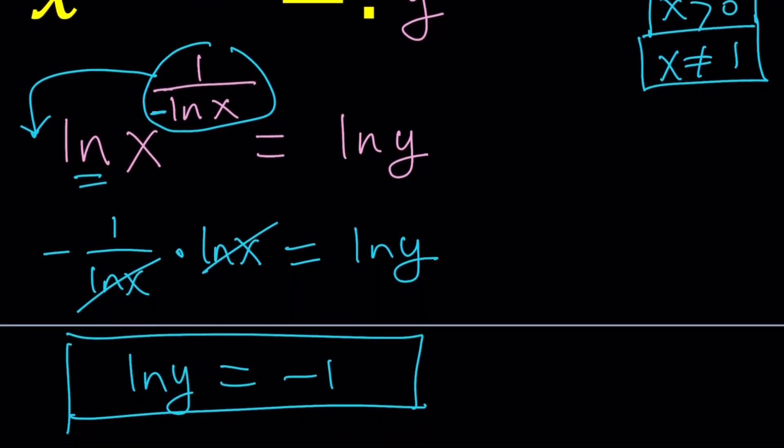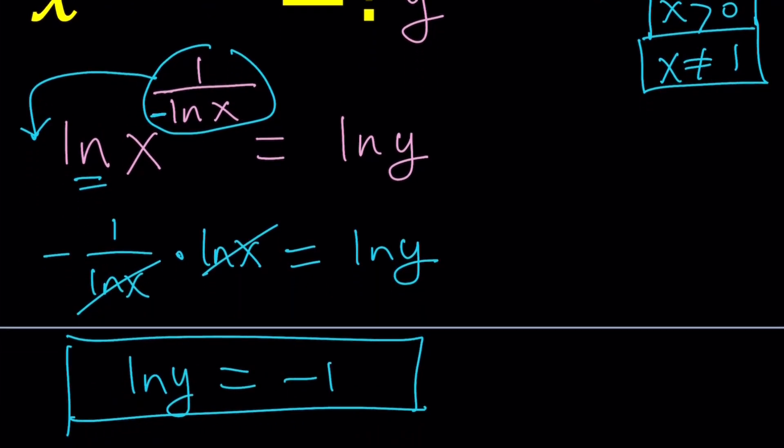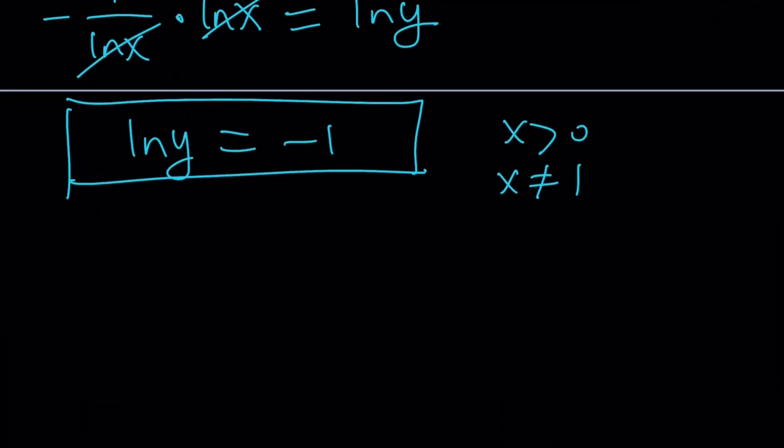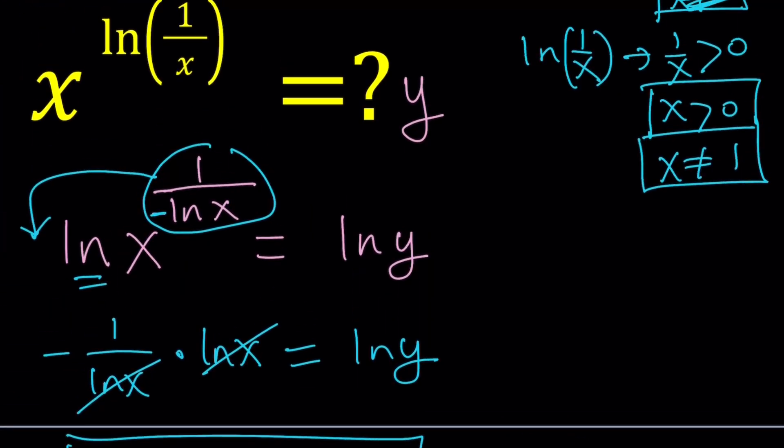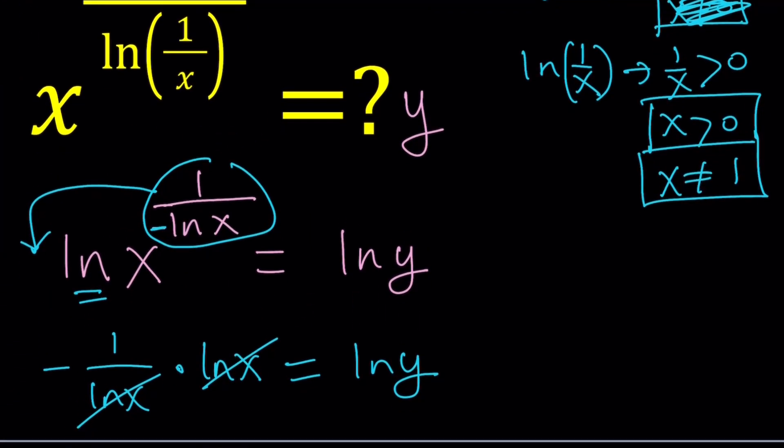Okay, under those conditions we can go ahead and solve this problem. Remember, x is positive and x does not equal 1. Let's copy that here. Okay. What is y from here? If you do e to the power both sides, e to the power ln y is y, so y becomes e to the power negative 1, which you can write as 1 over e. But we're solving for x. What is x? What is the relationship between x and y? What did we call y?